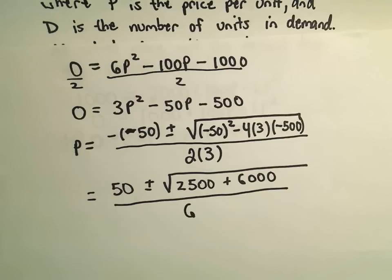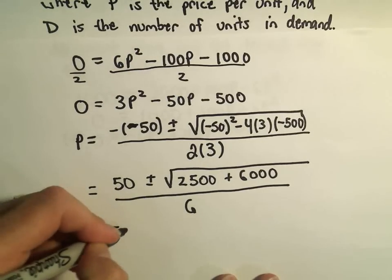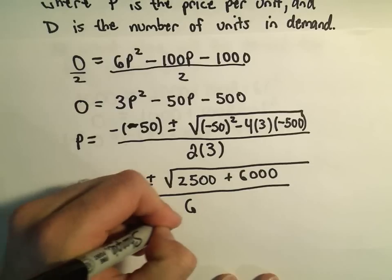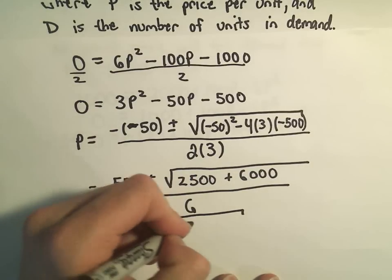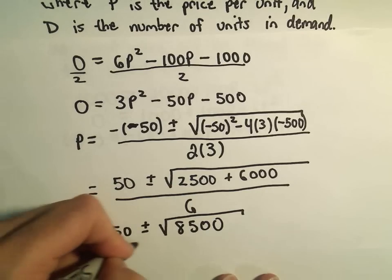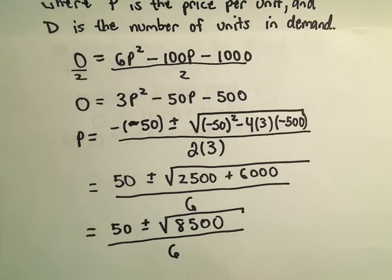Dividing everything here by 6. And now what we're going to do, 2,500 plus 6,000 is going to give us 8,500. If we divide everything by 6.